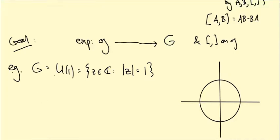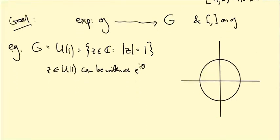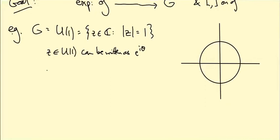And we actually know how to write these guys as X of something. Z in U(1) can be written as e^(iθ) for some θ. So what we get is an exponential map from the imaginary numbers iR to U(1) that just sends iθ to e^(iθ). That's our exponential map in this example.